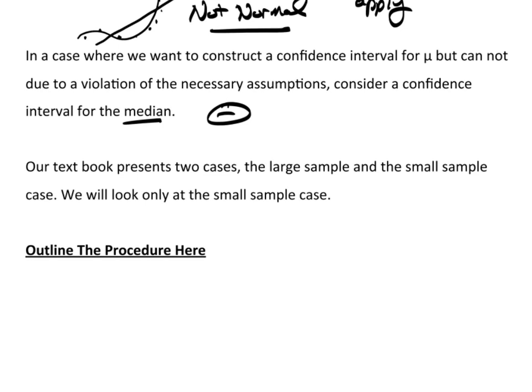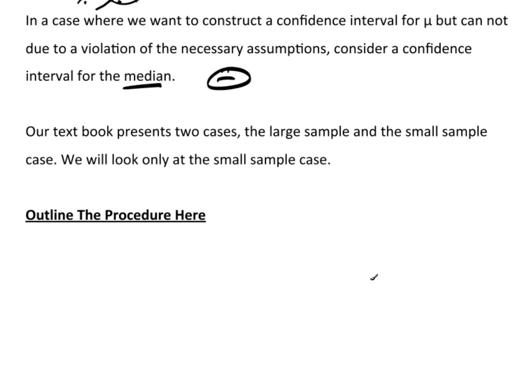Now, the textbook actually presents two cases: the large sample case and the small sample case. And I'm only going to address the small sample case. The reason I only use a small sample case is, on large samples, the small sample case converges to, is almost identical to the large sample case anyway. In addition, TC Stats is programmed to use the small sample case. So that's the way we're going to actually look at this.